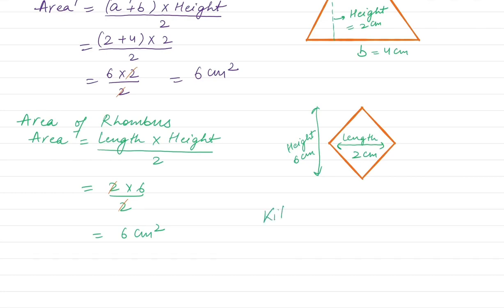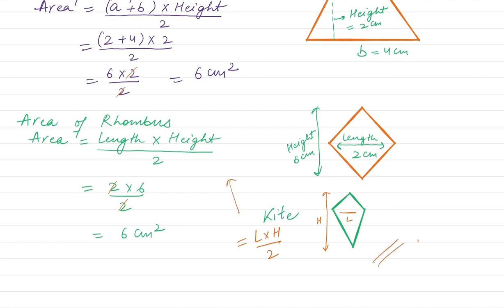Rhombus and the kite shape are similar — the kite is like a diamond shape. The side lengths are different in a kite, but the formula to find the area of a kite is the same as for a rhombus: length times height divided by 2. This is the same formula used for both the kite and the rhombus. In this way, we can find the areas of 2D shapes.